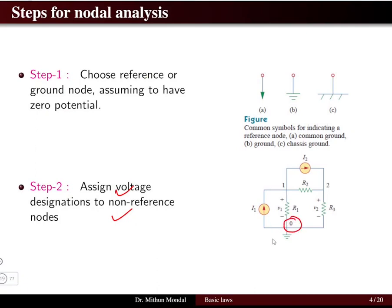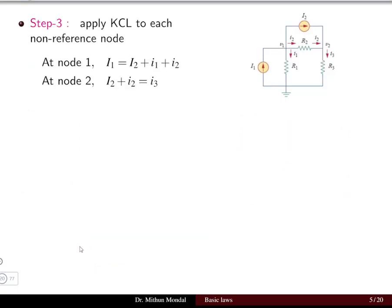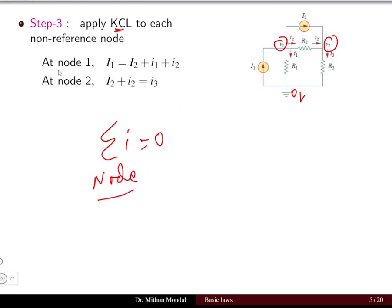The next step is to assign voltages to the non-reference nodes. The reference node gets zero volts, and the other nodes — where elements meet — are given voltages v1, v2, and so on up to vn-1, where the nth node is the reference node. Once voltages are assigned, we are ready to write KCL equations — the algebraic sum of currents at each node equals zero.